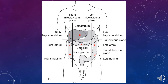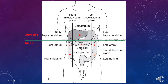The abdomen further divides into nine regions. The superior portion has: right hypochondrium, epigastrium, and left hypochondrium. The middle portion has: right lateral, umbilical, and left lateral. The inferior portion has: right inguinal, hypogastrium, and left inguinal.